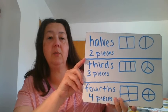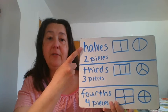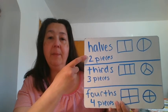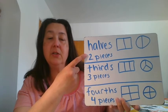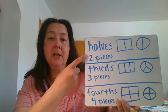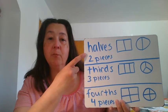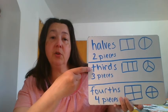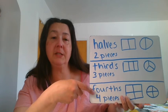We need to understand that the word halves means to cut something in half — you're going to get two pieces. The thing about these is that the pieces need to be the same size. This is halves, which we have two pieces. This one is thirds, where you're going to have three pieces. And this one is fourths, where you'll have four pieces.